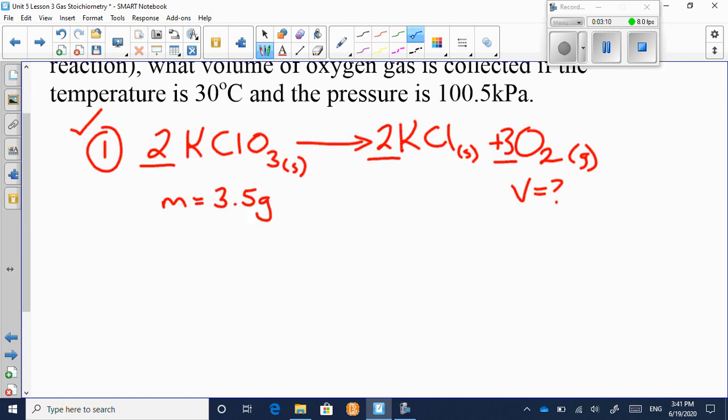Step number two is to convert to moles. So here we've been given a mass, so n is equal to little m over big M. So it's the 3.5 grams divided by, now we go to our periodic table, and we calculate the molar mass of KClO3. And when we do that, we get 122.5.